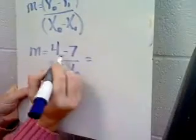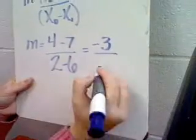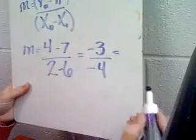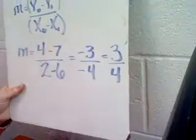When I simplify this, 4 minus 7 is negative 3, 2 minus 6 is negative 4, and a negative divided by a negative is positive, so I know the answer is going to be 3 fourths.